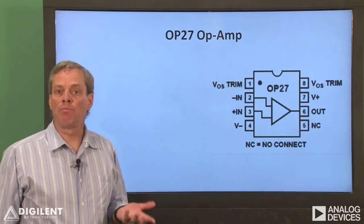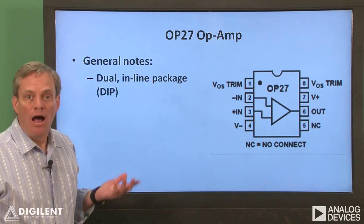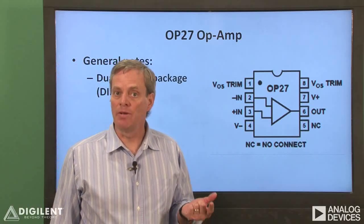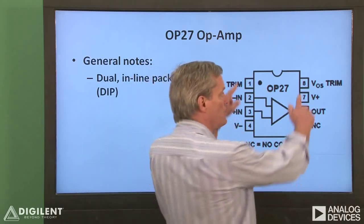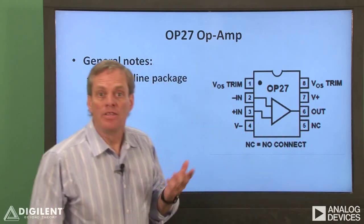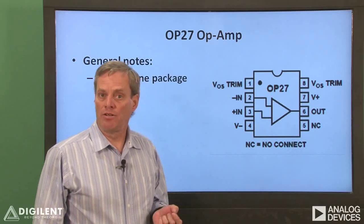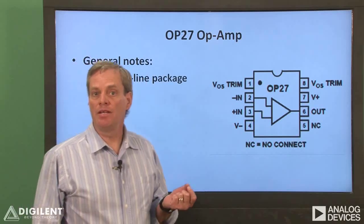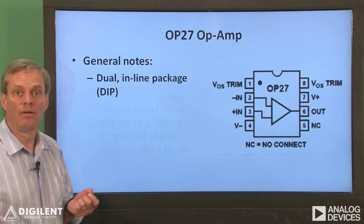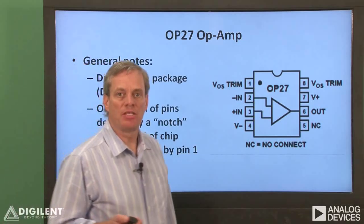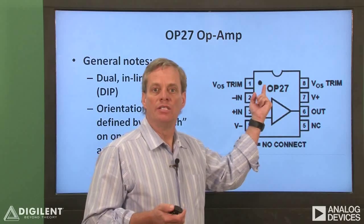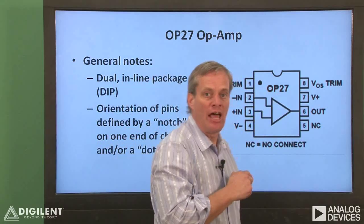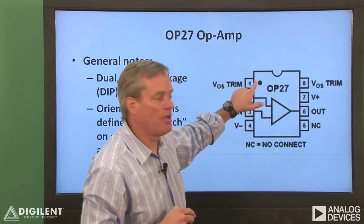A couple of comments about operational amplifiers in general: op-amps which can be used in a solderless breadboard are generally in what are called dual in-line packages, abbreviated as DIP. This simply means that the pins are oriented in two rows of pairs. The spacing of the pins allows the chip to be inserted in a solderless breadboard with the central channel separating the rows, ensuring that any pin is electrically isolated from any other pin. The orientation of the pins is specified by a notch at one end of the chip or a dot in one corner. If you're looking down at the chip so that the notch is at the top, pin 1 will be in the upper left-hand corner.